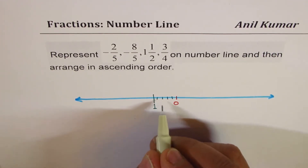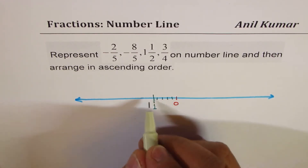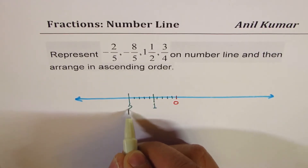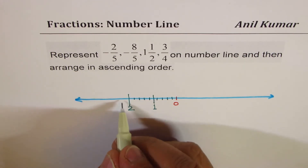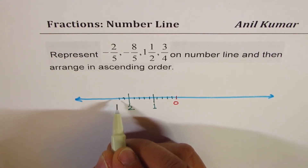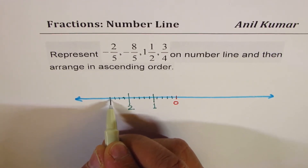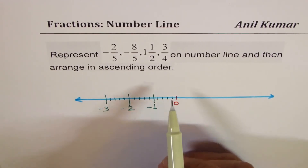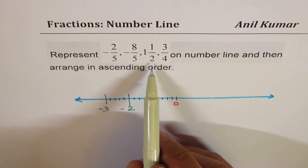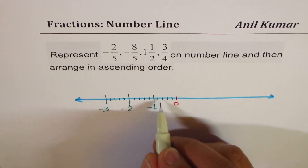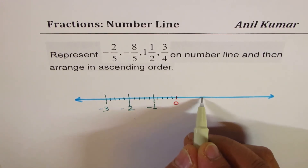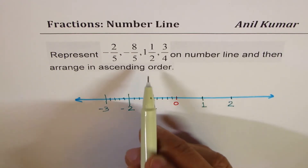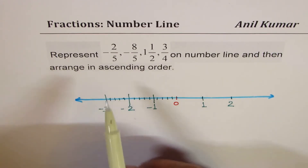If I mark 1 here, each small division is 1/5. So: 1, 2, 3, 4, and this is the 5th giving me 2. Likewise on the left side I write negative numbers: 1, 2, 3, 4, and the 5th one. On the right side, since we have fractions over 2 and 4, I'll mark 1 and 2 and then divide as per the denominator.